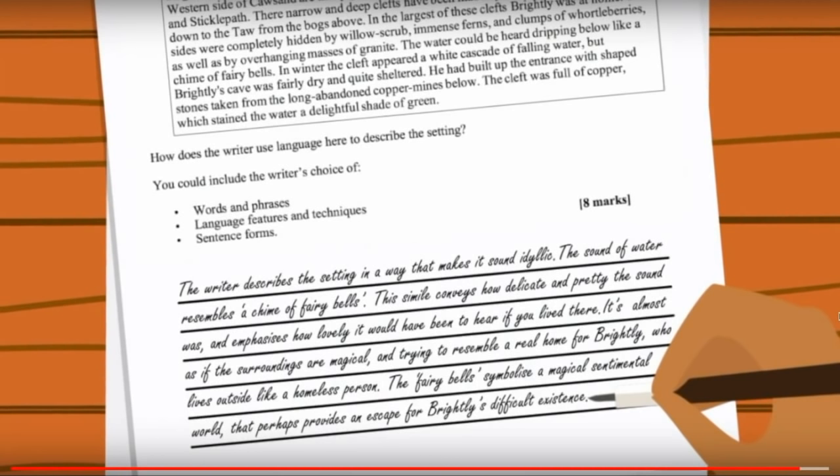So if you've seen my animated video on paper 1 question 2, we look at this part of the Brightly text. The water could be heard dripping below like a chime of fairy bells. And you might think, well there's a simile. But you need to ask why is that simile used? And you can see in the sample answer there, you can read it on screen or watch the video, it's the why that is the key part of this answer. Just being able to identify a simile is not going to get you anywhere. You need a specific, contextualised and precise analysis of why it's used. So continually asking yourself why is a great way to do that.